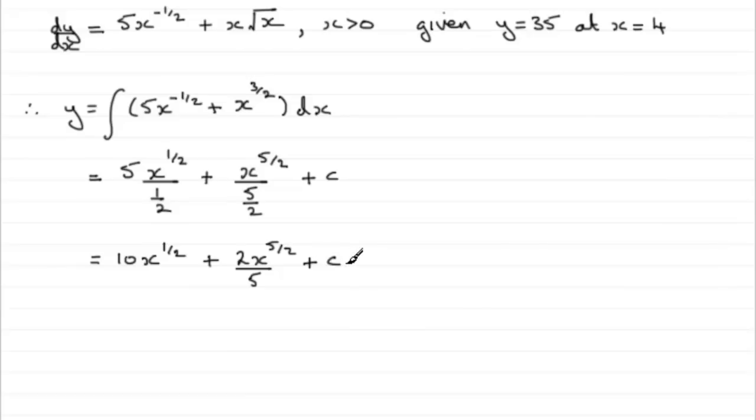Now we need to work out this constant of integration, and that's where this comes in. We know that when x equals 4, we're told that y equals 35. So we can substitute this into here.